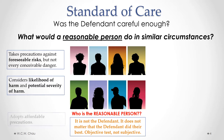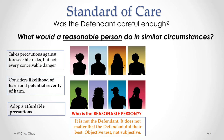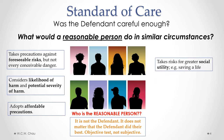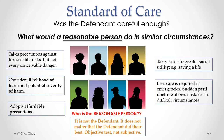Another thing a reasonable person would do is adopt affordable precautions to prevent mishap, accidents, or injury. So a reasonable person does consider the cost — there is a cost-benefit analysis that a reasonable person would apply. A reasonable person also takes risks where social utility is involved, such as in an emergency situation where they are trying to save someone's life. Related to that is the sudden peril doctrine, which allows a reasonable person to make mistakes in difficult circumstances, especially in emergencies.